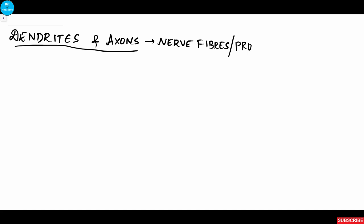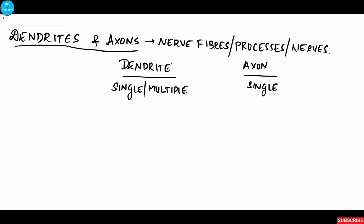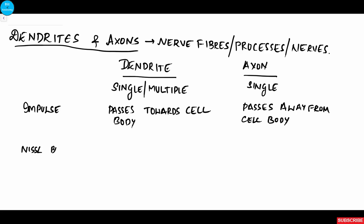These are the nerve fibers or nerve processes, also called nerves. The major differences are: dendrite is usually single or multiple, axon is always single. The impulse in dendrite passes towards the cell body whereas in axon it passes away from the cell body. Nissl substances extend into the dendrite but are absent in the axon because of the aggregation of neurofibrils at the axon hillock.